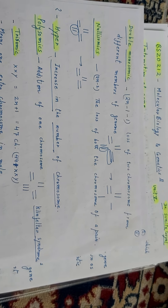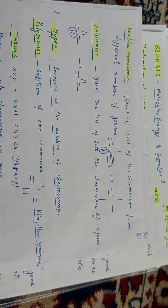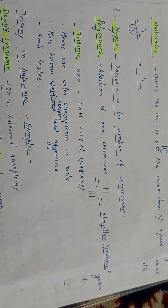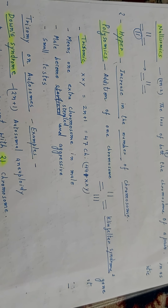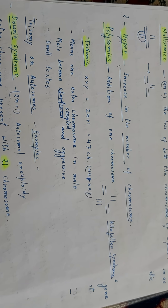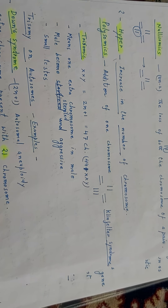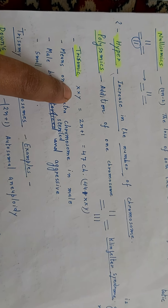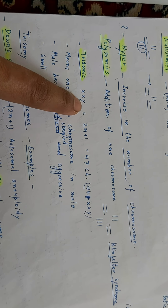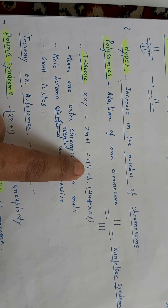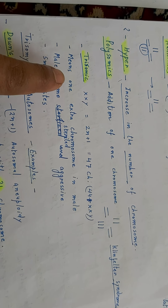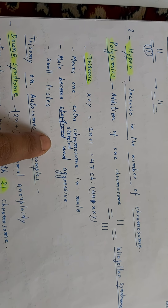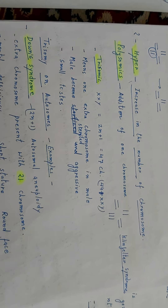Nullisomic (2N minus 2): loss of both chromosomes of a pair — the loss of both chromosomes of a pair is known as nullisomic. Hyper: increase in the number of chromosomes — polysomic — addition of one chromosome. Klinefelter syndrome: one extra chromosome added. Trisomic: if sex chromosome number increases — XXY — when X chromosome increases, 2N plus 1 gives 47 chromosomes, meaning one extra chromosome in male. The male becomes sterile and aggressive, with small testes developing.